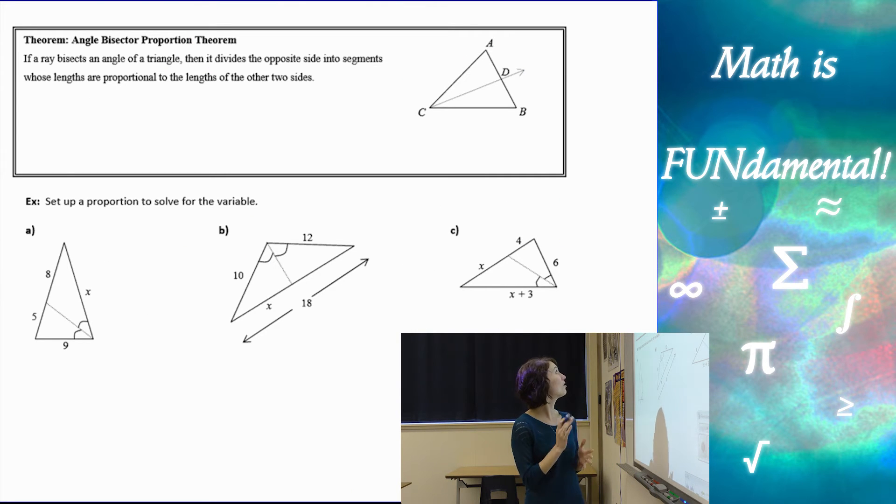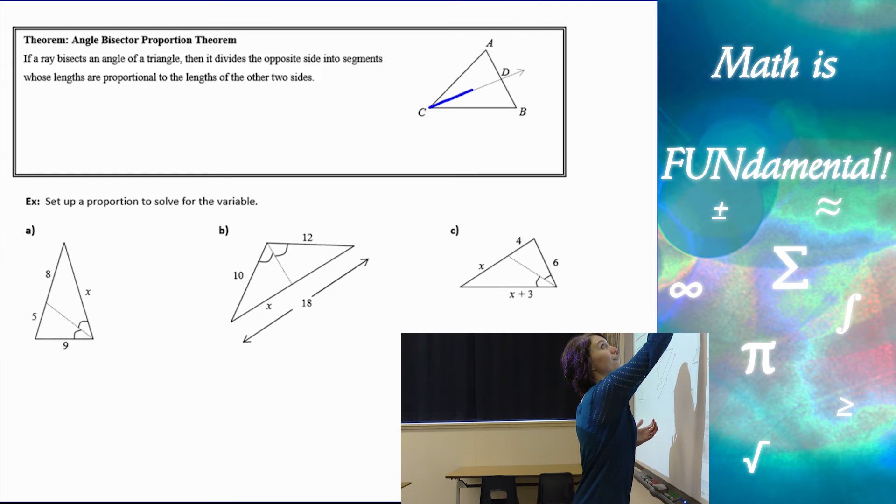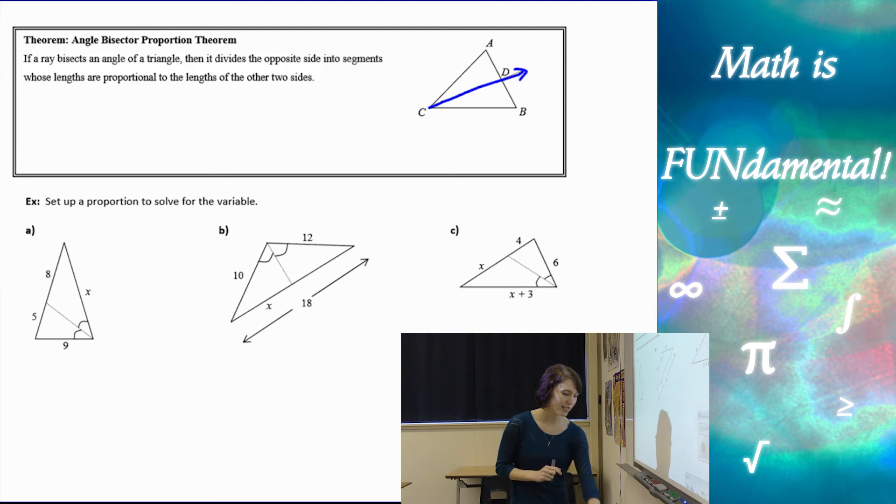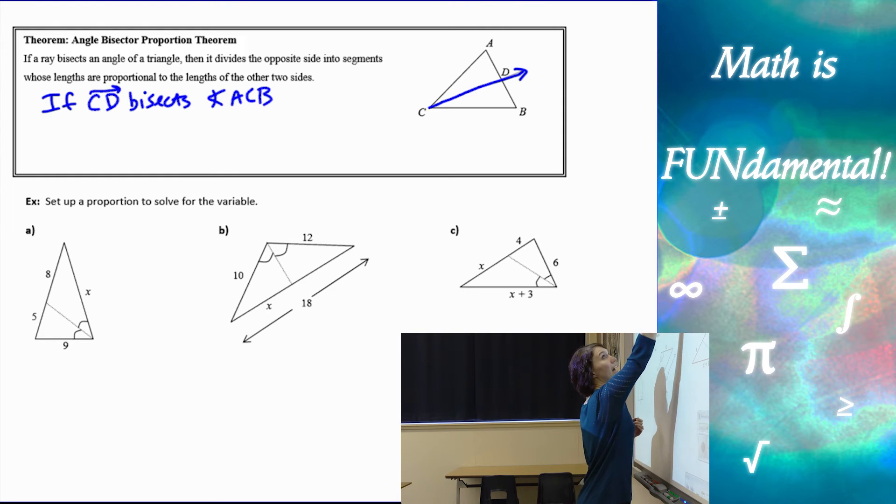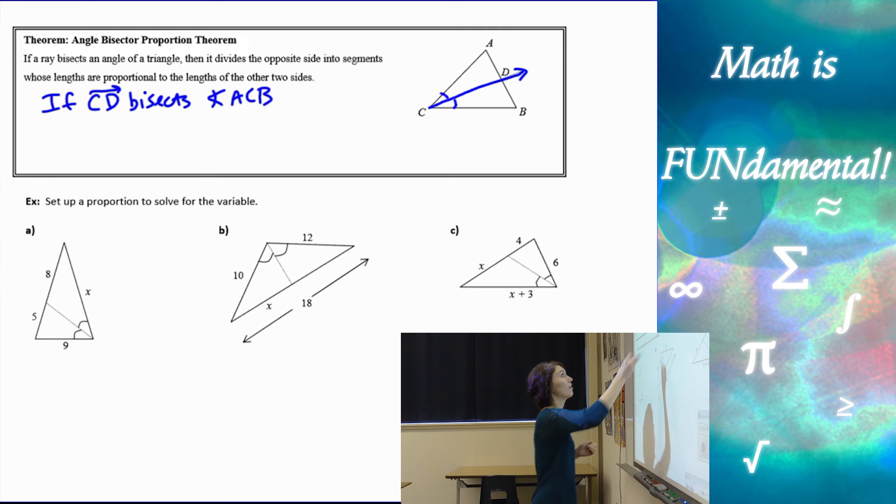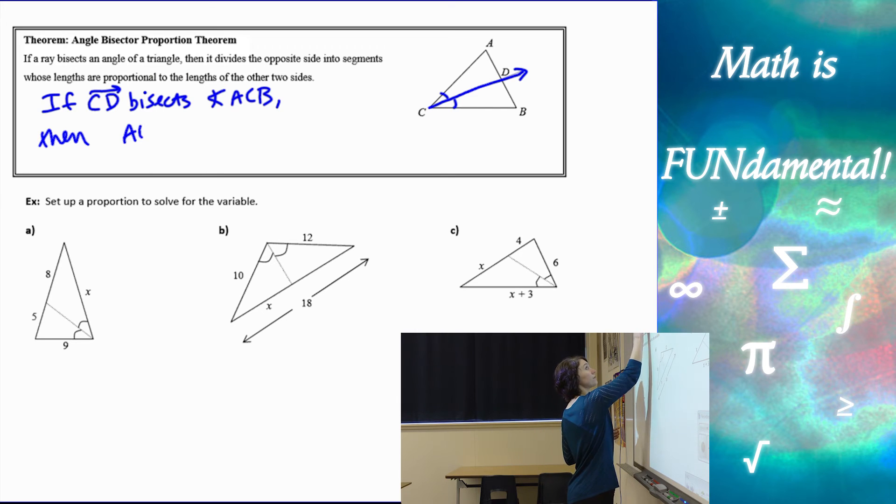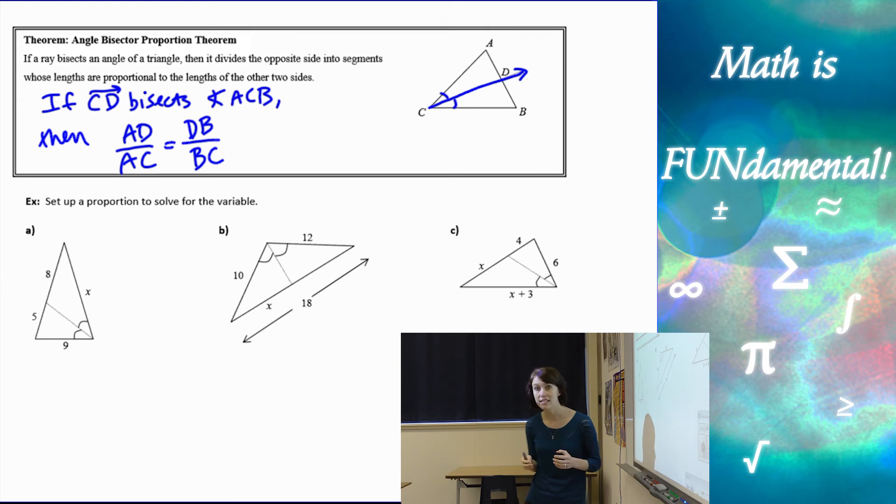Let's look at the next one, which is angle bisector proportion theorem, which states if a ray bisects an angle of a triangle, then it divides the opposite side into segments whose lengths are proportional to the segments of the other two sides. So we have a ray CD. If the ray CD bisects angle ACB, then I can say that AD over AC would be equal to DB over EC. So it divides the sides proportionally.